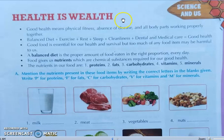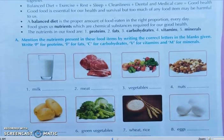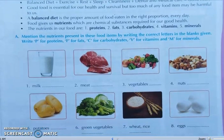Here you can see some questions. We have to write the correct letter. Question A: Mention the nutrient present in each food item by writing the correct letter in the blanks given. Write P for protein, F for fats, C for carbohydrates, V for vitamins, and M for minerals.